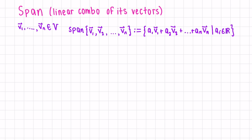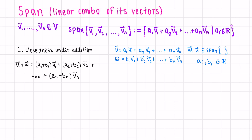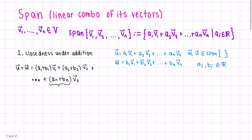Let's first see why it's a subspace, starting with closedness under addition. If we define u to be a1*v1 plus a2*v2 plus all the way up till an*vn, u is included in the span. And let's say w is also in this span — the a's and the b's are just real numbers. Their sum is just another linear combination of the vi's, because we know that a plus b is just a real number.